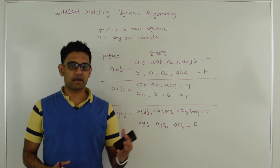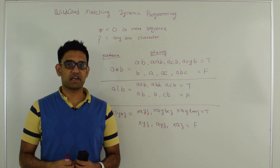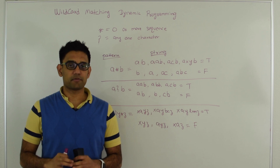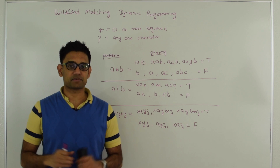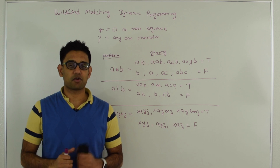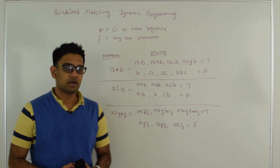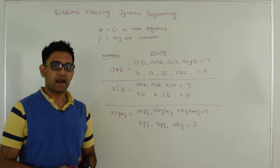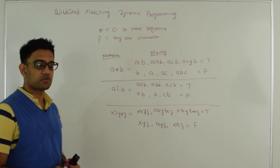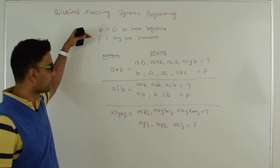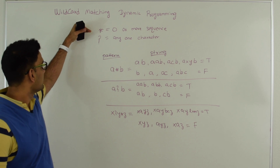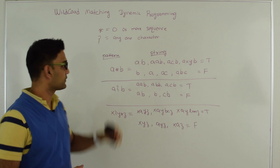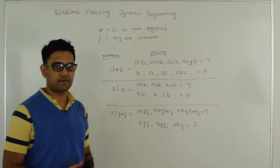You have a pattern and a string, and you have to tell whether this pattern matches the string or not. We are looking for the complete match of a string, not a partial match. In the pattern, along with regular characters, we have two special characters: a star and a question mark. Star represents zero or more sequence of characters, while question mark represents any single character.